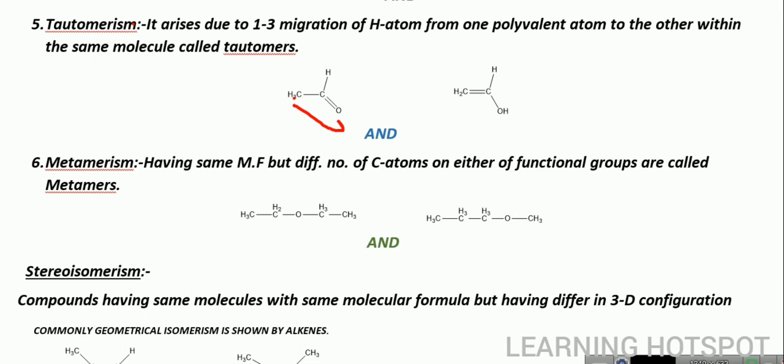Then we have metamerism, in which the molecular formula is same but the number of carbon atoms on either side of the functional group is different — whether the left side or the right side. For example, there are two carbons on the left side and two carbons on the right side in one molecule. But in another, we have three carbons on the left side and one carbon on the right side. So this is metamerism, in which the number of carbon atoms is different on either side of the functional group.